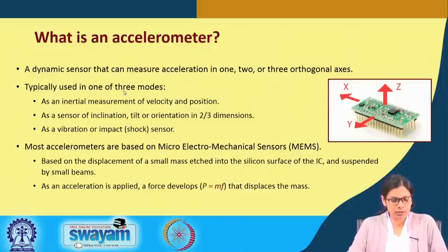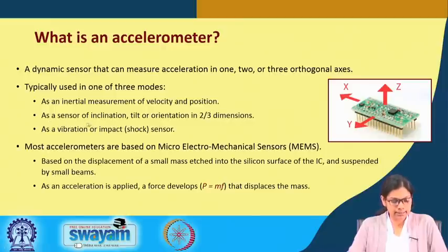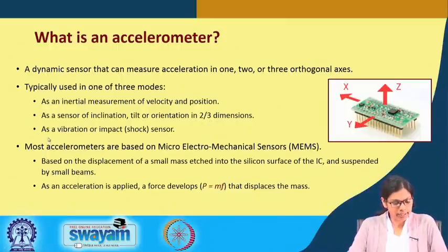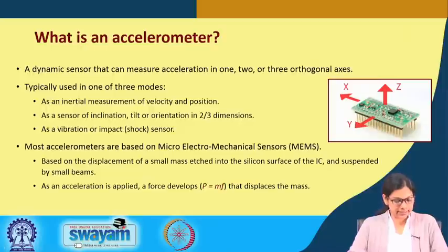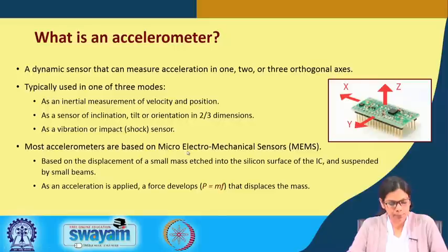Typically it is used in one of three modes. It can be used as an inertial measurement of velocity and position. It can also be used as a sensor of inclination, tilt, or orientation in 2 to 3 dimensions, or it can be used as a vibration, impact, or shock sensor. Most of these accelerometers are based on micro electro mechanical sensors called MEMS.